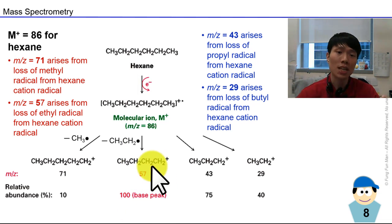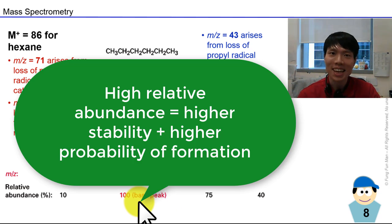And you might ask, what makes 57, the butyl cation, the highest relative abundance? Base peak. It's by probability how stable it is and how likely it can form.